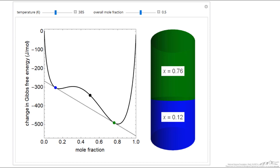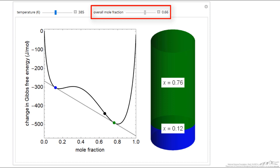So now, very clearly, we have two distinct phases, and the relative amounts, if I change the overall mole fraction, then you can see, if we get closer to mole fraction of the green dot, then we have more and more of the phase with the mole fraction of 0.76.